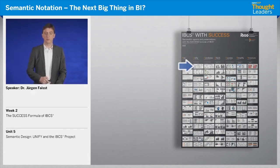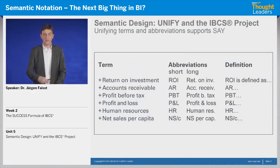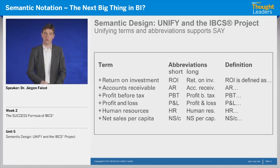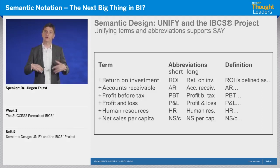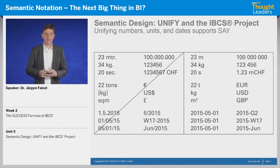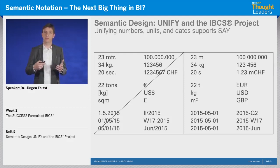Let's start with terms and abbreviations. We have been talking in the semantic notation part of this course about suggesting a unified usage of terms and abbreviations. This is not only a semantic rule, but it helps to understand reports and presentations — it supports the conveyance of messages, the SAY step of our success formula. The same applies to numbers, units, and dates: using the same notation will help you better understand a report, and this also supports SAY.